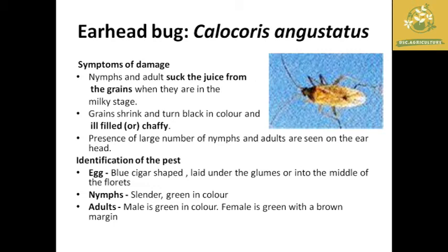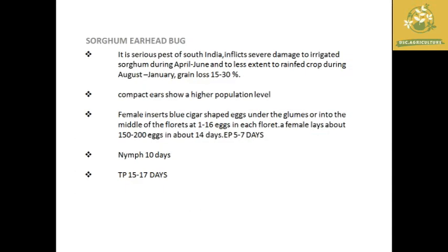Next is the earhead bug, whose scientific name is Calocoris angustatus. The nymphs and adults suck juice from the grains, making it a major pest during the milky stage. Grains turn black and become ill-filled and chaffy. Eggs are blue, scissors-shaped, laid under the glumes or in the middle of the floret. Nymphs are slender and green; adult males are green and females have brown margins. The total life period is around 15 to 17 days, with a nymphal period of around 10 days.